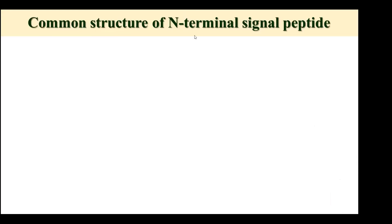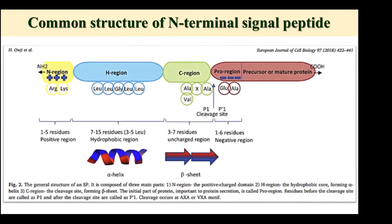The common structure of N-terminal signal peptides is basically composed of three main parts. The foremost part — shown in yellow — is the N-region, the positive charge domain. It is followed by the hydrophobic region — the blue part — which is the hydrophobic core forming an alpha helix. This is in turn followed by the C-region, the cleavage site forming a beta sheet. The initial part of the protein important for protein secretion is called the pro-region. Residues before the cleavage site are called C1, and after the cleavage site they are called P5-1. Cleavage occurs at AXA or BXA motifs.